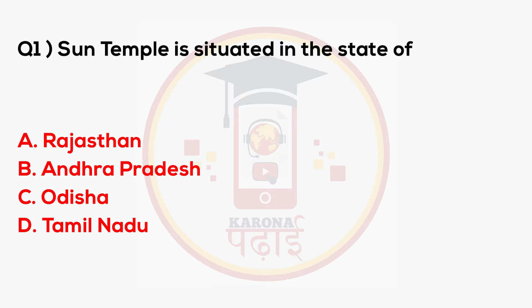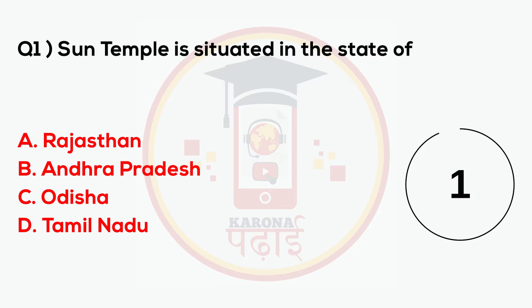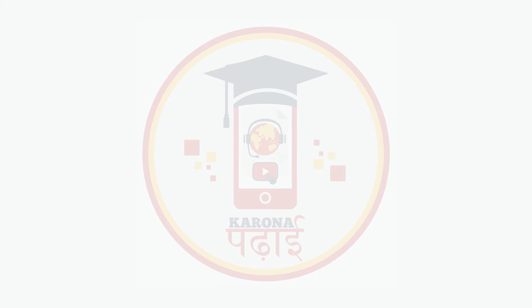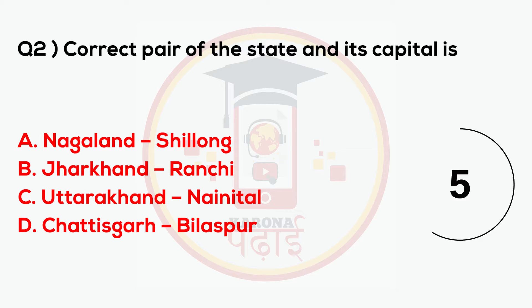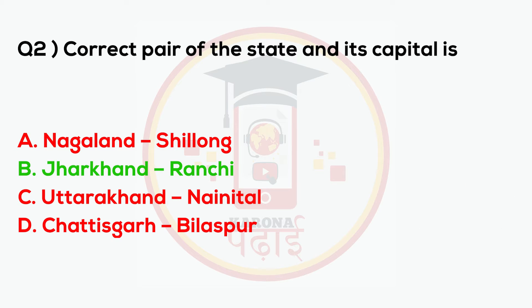Sun Temple is situated in the state of Odisha. The correct pair of state and its capital is Jharkhand and Ranchi.